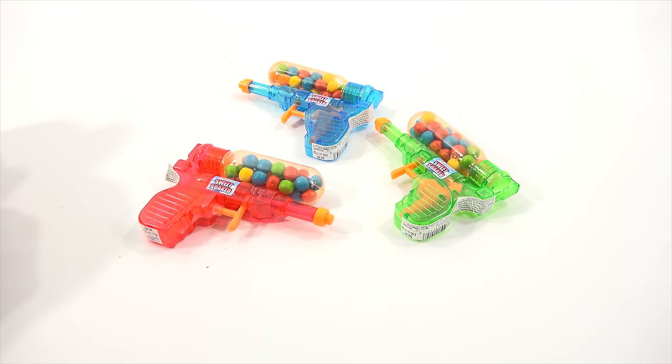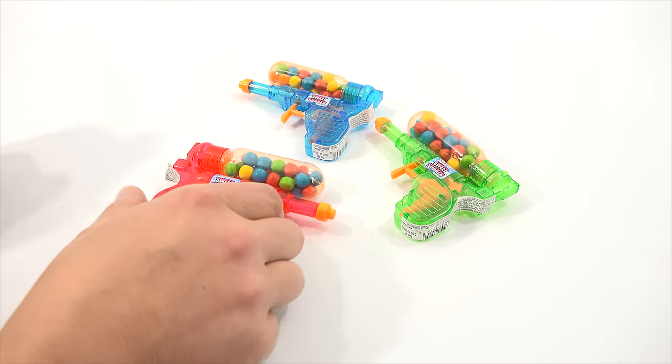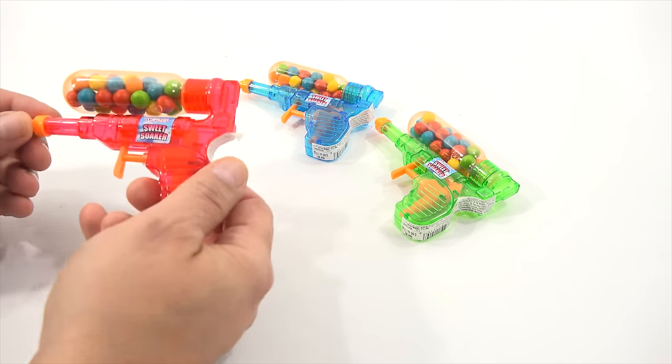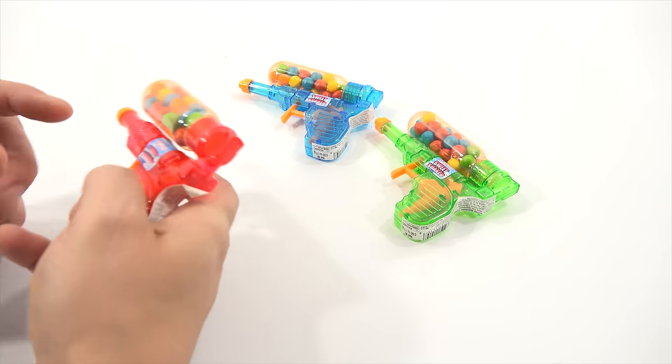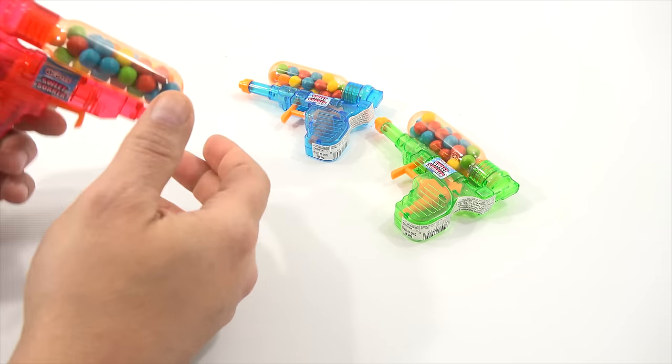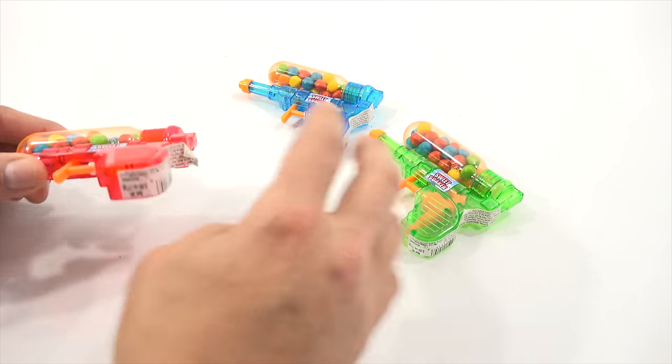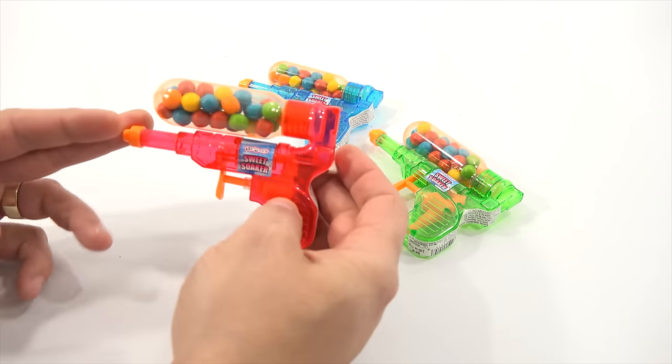So the sweet part is the candy and the soaker part hopefully is a working squirt gun. I've showed these before, not these particular ones, and they were not actually working squirt guns. So I've got three colors and they are from Awesome.